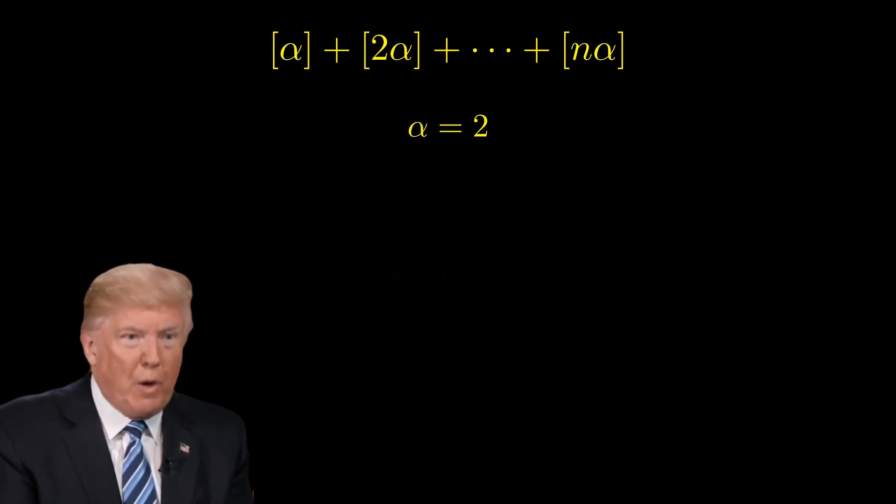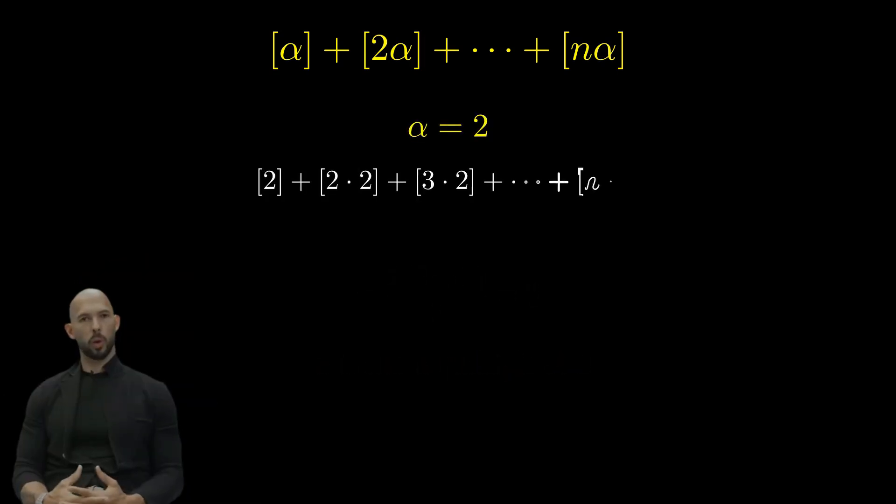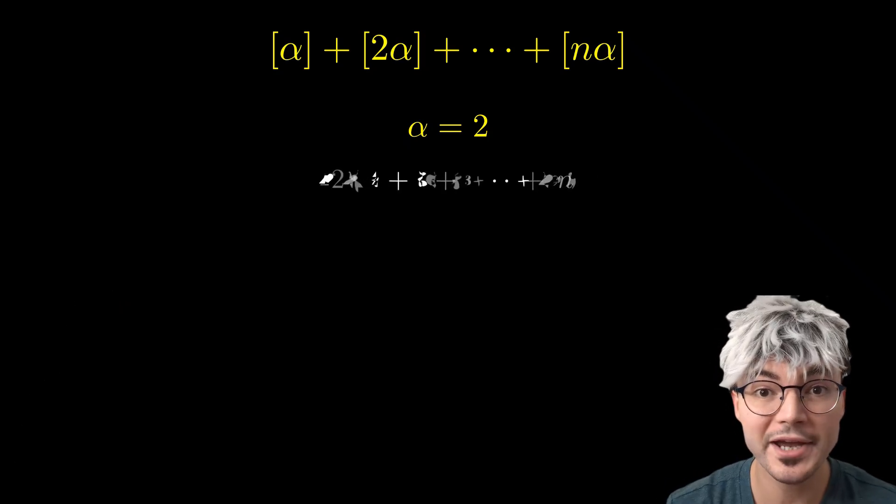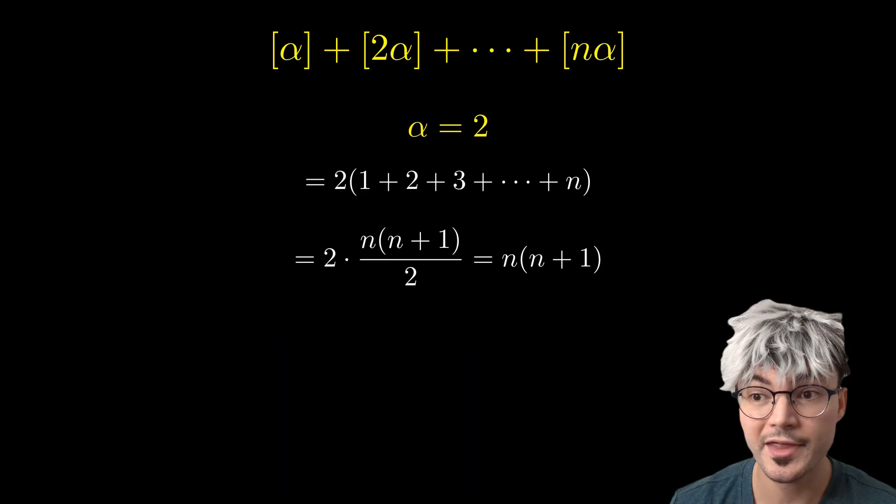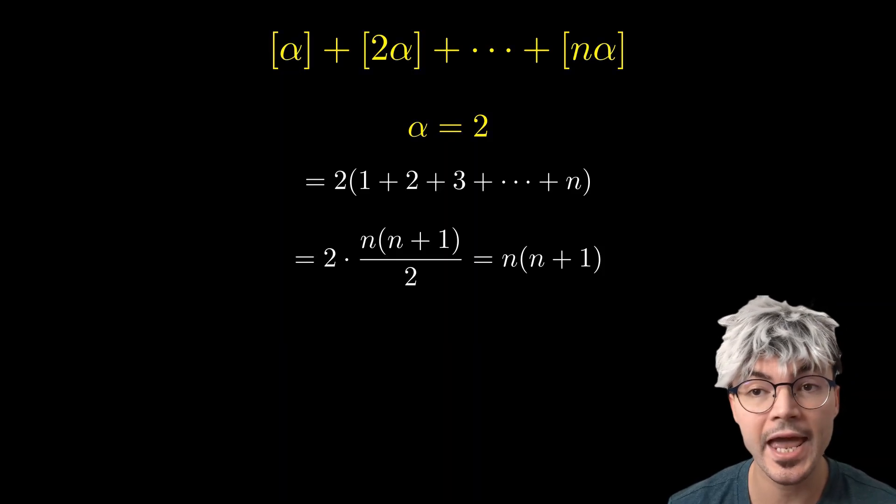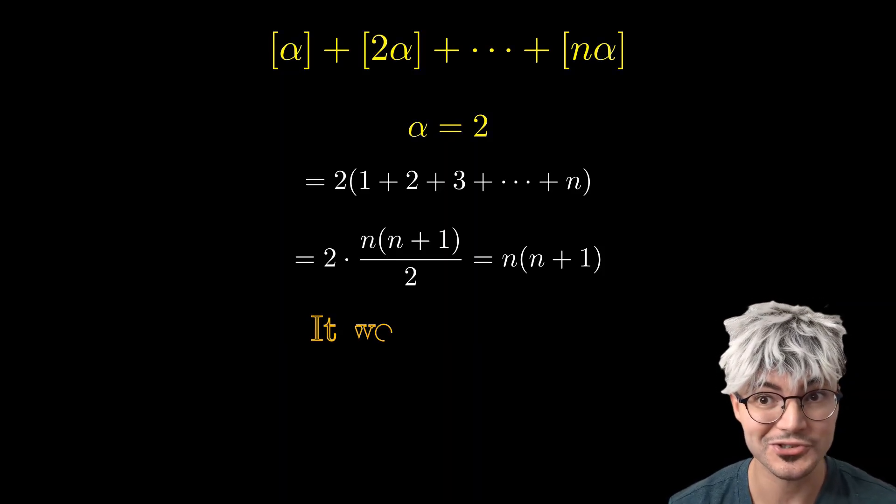Let's try alpha equals 2. I have faith this time. All of these numbers are integers, so we can remove the floor function. Factorizing by 2 and then simplifying the expression, turns out that we get n times n plus 1, which is an integer. It works!